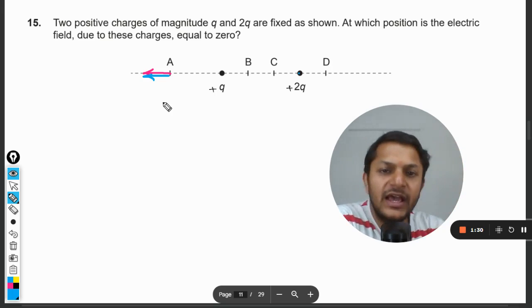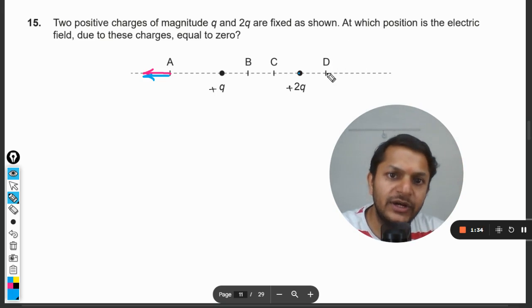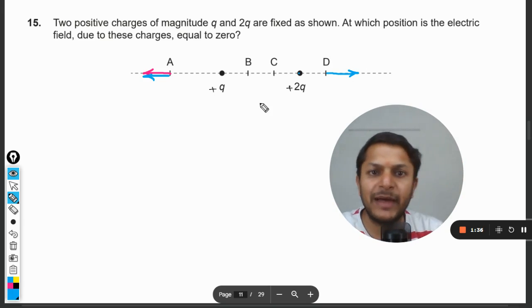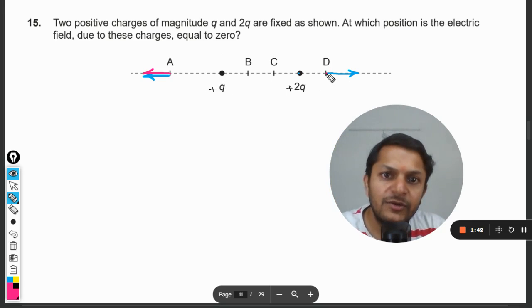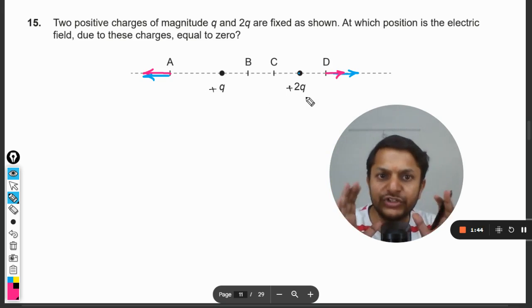Both of the directions are towards left hand side, so there is no chance of being zero. Let us go for point D now. The 2q is very near to it so it will be obviously repelling D, and the other charge which is q, which is lesser as well as farther away, will be forcing D towards the same direction.